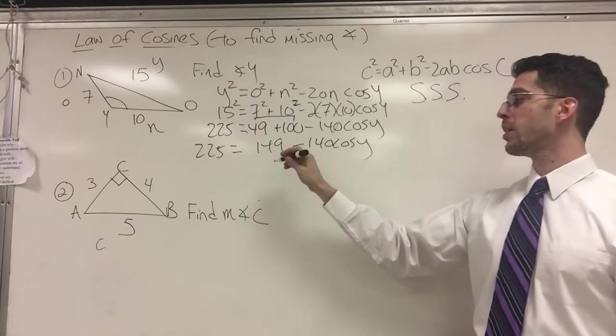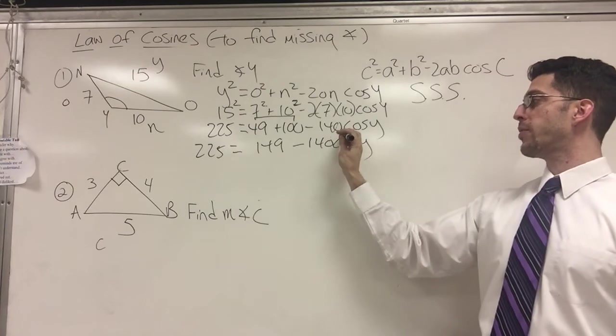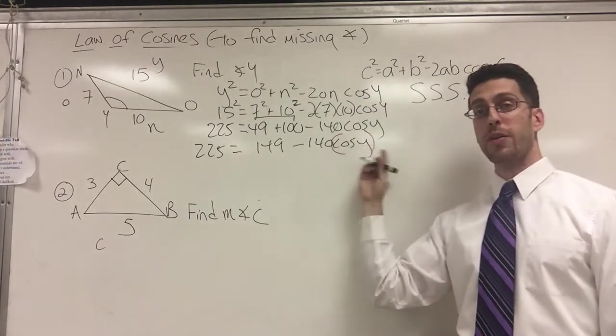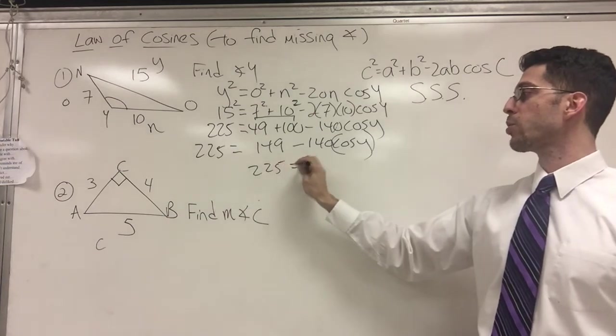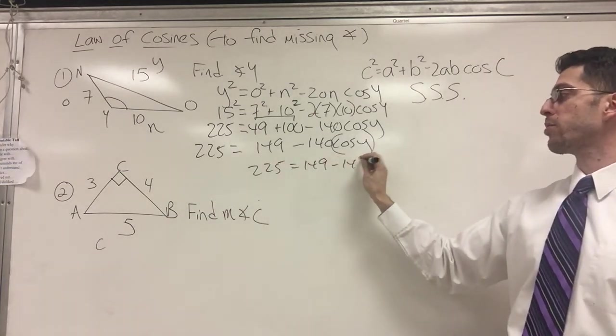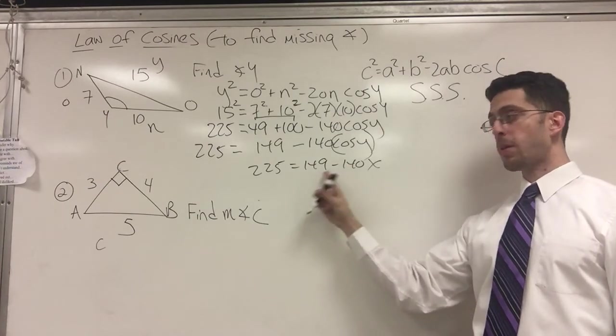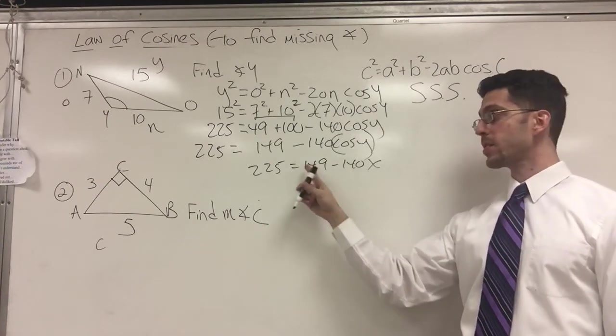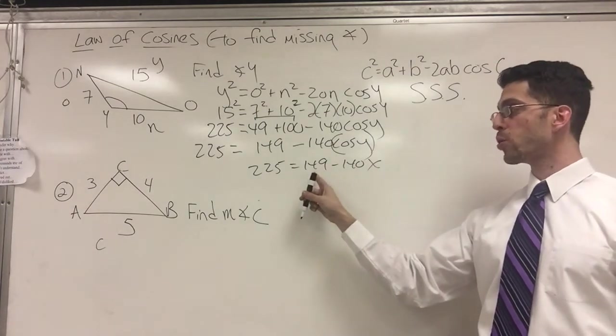These are not like terms. This is almost like saying cosine Y is a variable because you don't know what Y is. So it's almost like saying 225 equals 149 minus 140x. If you were solving for X, would you combine these? No, they're not like terms. This is a constant. This is a coefficient. They're not the same.